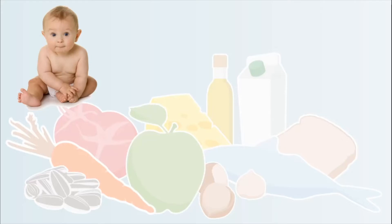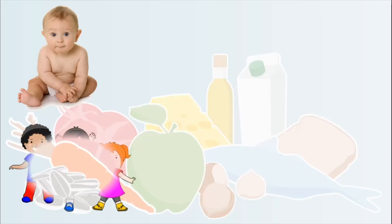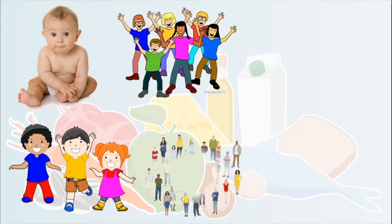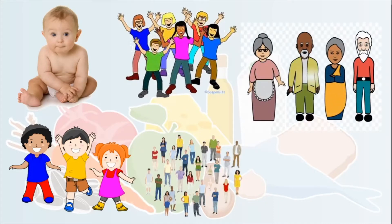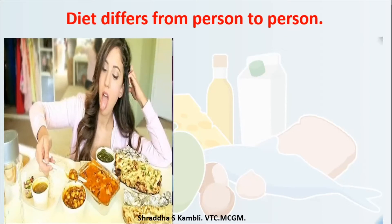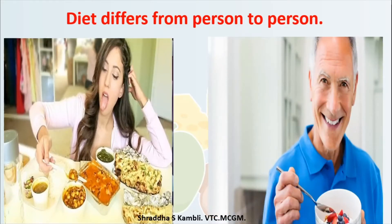We also learned that according to the age of a person — whether they are a small baby, young children, adults, or old people — the diet changes. When a person is young, they require more food because they work hard, go to the office, and do heavy work. But when a person becomes old and stops doing heavy work, their diet should also change accordingly.